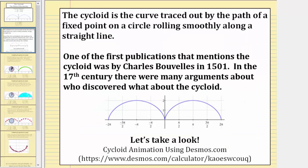One of the first publications that mentions the cycloid was by Charles Bouvelles in 1501. In the 17th century, there were many arguments about who discovered what about the cycloid, which is where the curve gets the name the Helen of geometry.